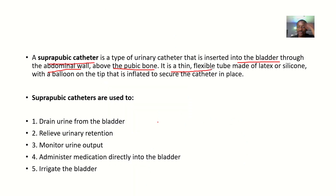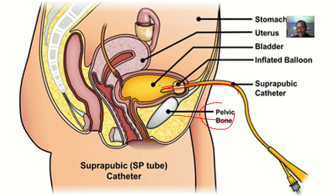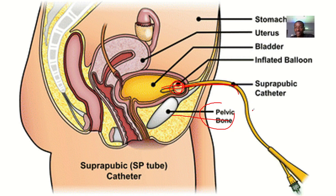It is a thin flexible tube made of latex and silicone with a balloon on the tip that is inflated to secure the catheter in place. Once it is inside the bladder, you inflate the balloon so it cannot come out — except when you deflate it.